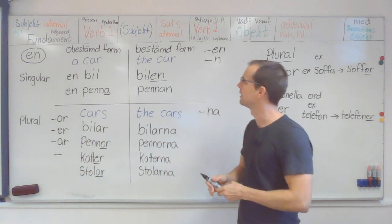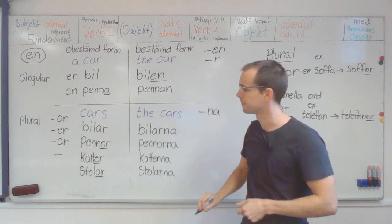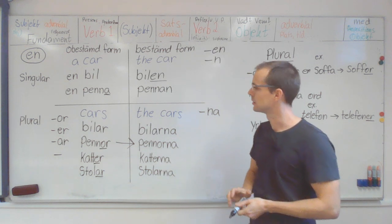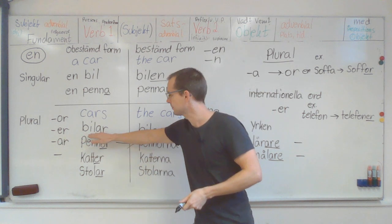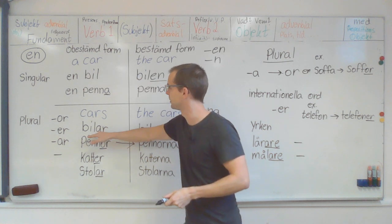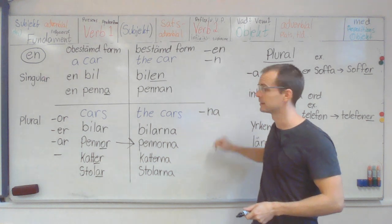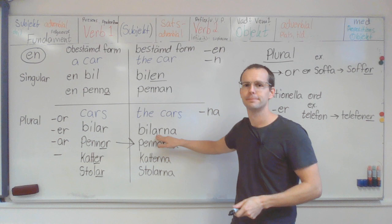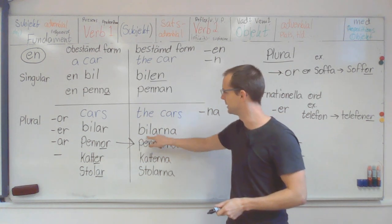And then we have determined form and plural. And they go this way. So, you have bilar, undetermined form. But determined form you put na. So, bilar. Bilarna. Determined form. The cars. Bilarna.